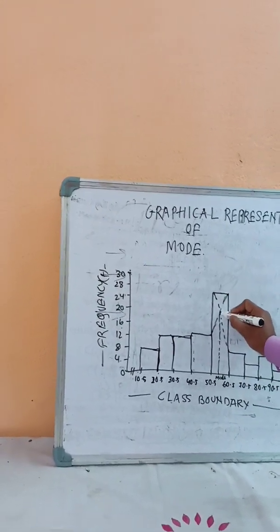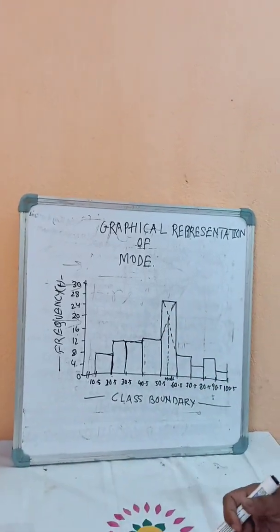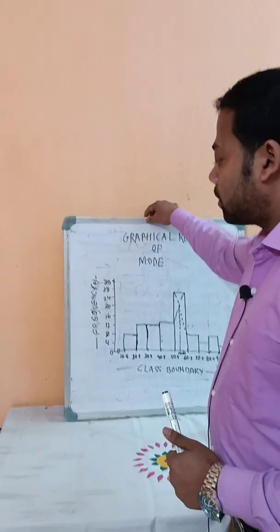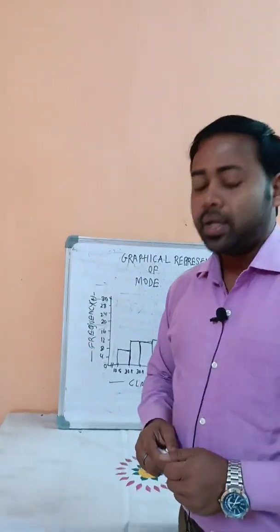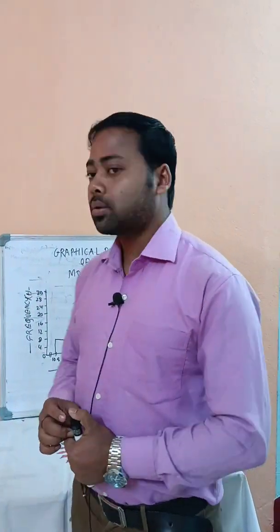We calculate this pointer at 54.61 and show the graphical presentation. This covers both the median and mode calculations. The graphical presentation of the mode is shown using the histogram with the dotted pointer line indicating the mode value.